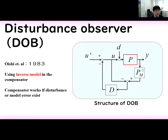First, I introduce Disturbance Observer. Disturbance Observer is produced by OEC. This structure includes an inverse model in the compensator, and the compensator works if disturbance or model error exists. When disturbance and model error do not exist, this compensator doesn't work.